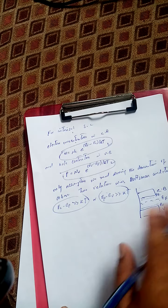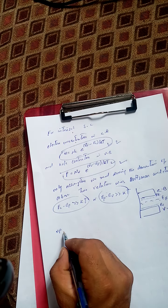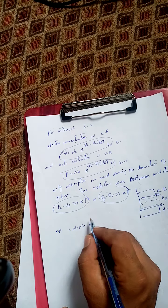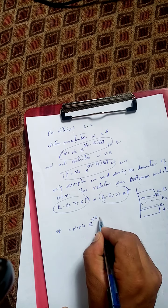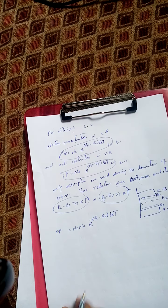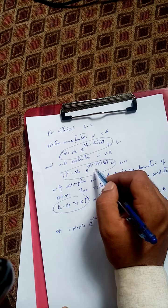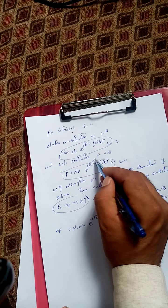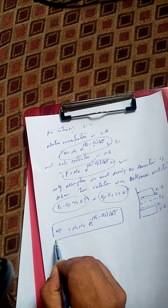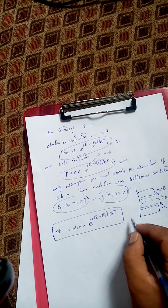Now the product of these two equations is np. The product of the electron concentration n = Nc · e^((EF − EC)/KT) and hole concentration p = Nv · e^((EV − EF)/KT) gives np = Nc · Nv · e^(−(EC − EV)/KT). When we take the product, EF cancels out, leaving only EC and EV. This product is independent of EF.